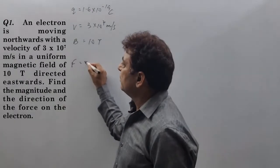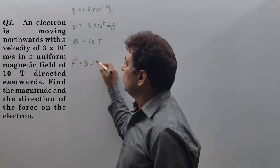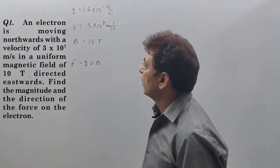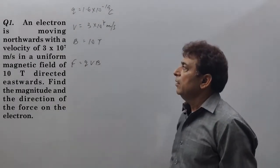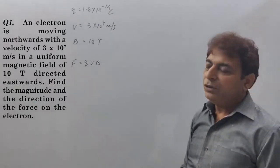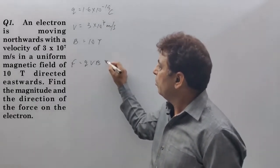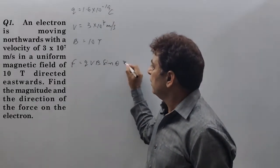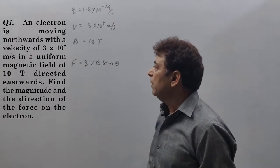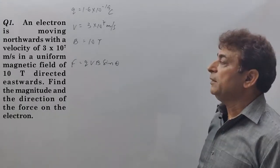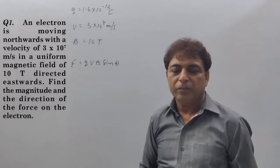Force acting on a charge moving in a magnetic field is given by: F = qvB sinθ.